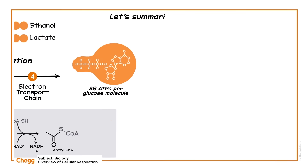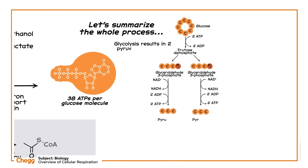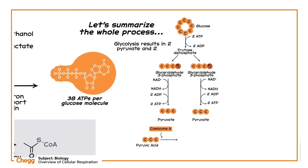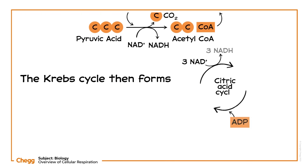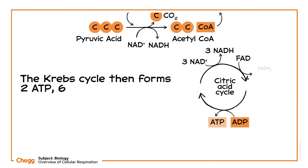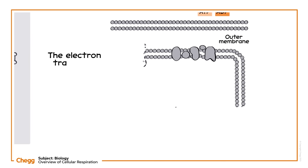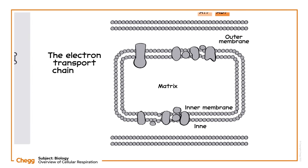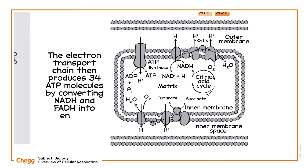So let's summarize the whole process. Glycolysis results in 2 pyruvate and 2 ATP molecules. The Krebs cycle then forms 2 ATP, 6 NADH, 2 FADH, and 4 CO2 molecules. The electron transport chain then produces 34 ATP molecules by converting NADH and FADH into energy.